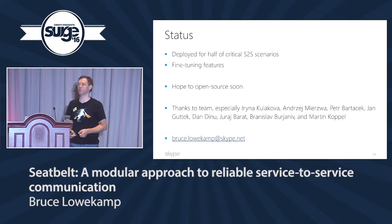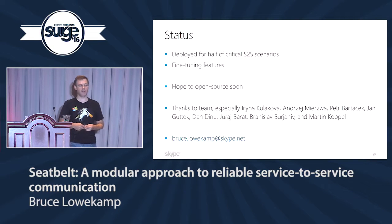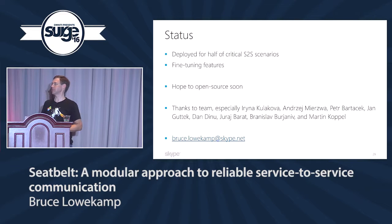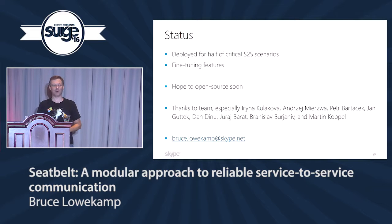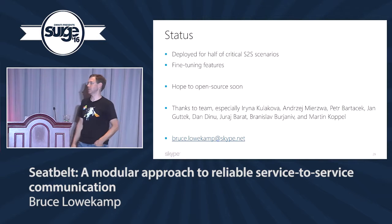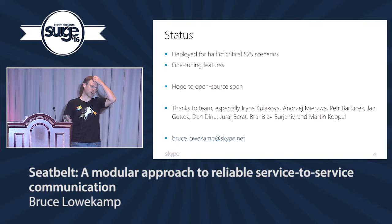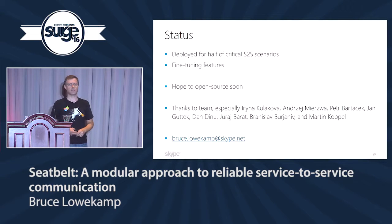Status: we have Seatbelt deployed for about half of our critical service scenarios. We've been rolling it out slowly to make sure we have the right knobs — we think we do but we're still fine-tuning. I'd hope to say it was open source; I haven't gotten permission yet. We're trying to open source it internally and within Microsoft first. Thanks to the team and especially André Mirza and Martin Koppel, who did an earlier presentation on this that I used slides and illustrations from.